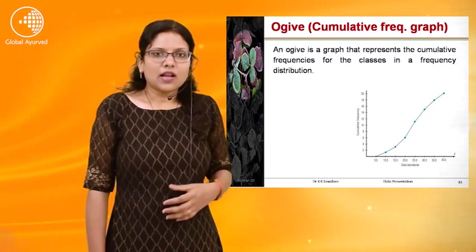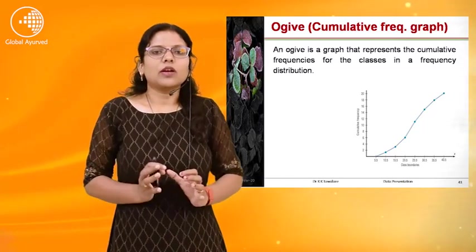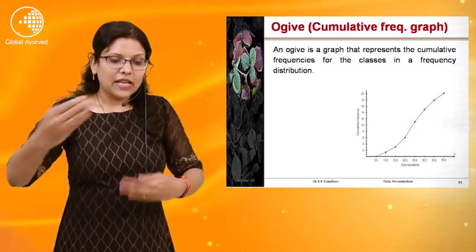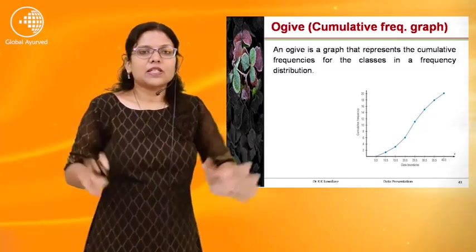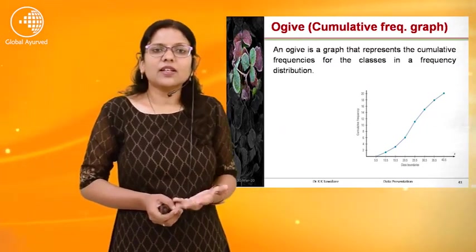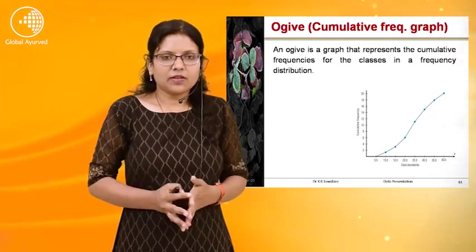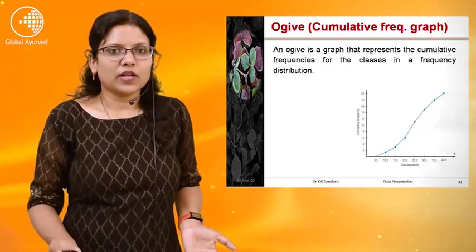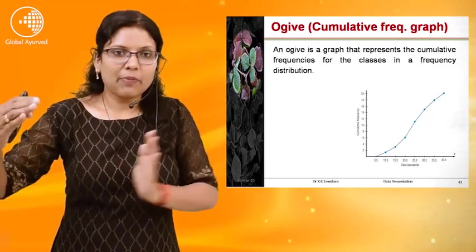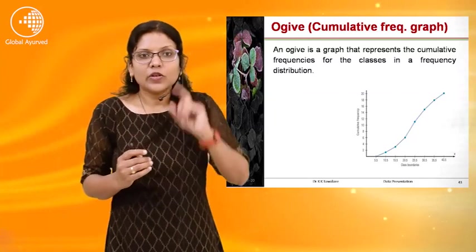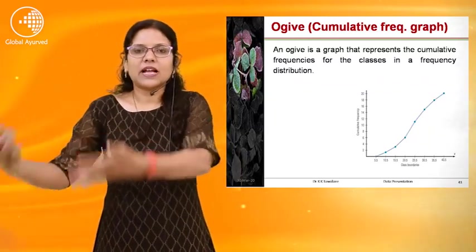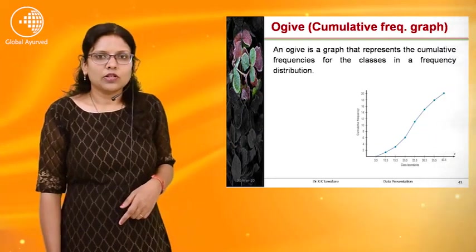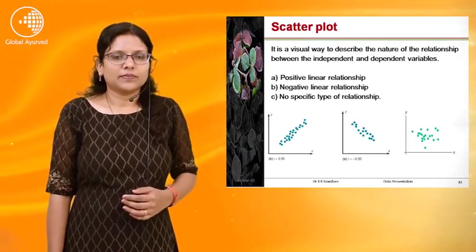Next is the ogive, also called the cumulative frequency graph. The ogive is a graph that represents the cumulative frequencies for the classes in a frequency distribution. The cumulative frequency means each subsequent frequency has the previous frequencies added to it — similar to a cricket score where each batsman's runs accumulate to the team total. This is called the cumulative frequency graph.